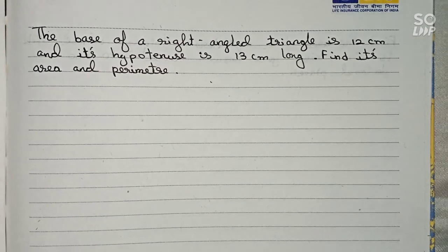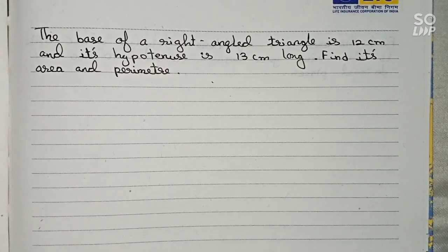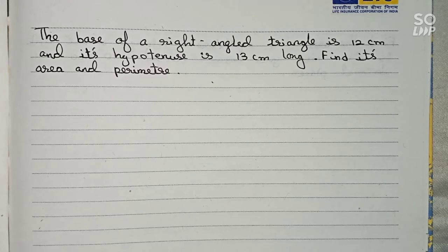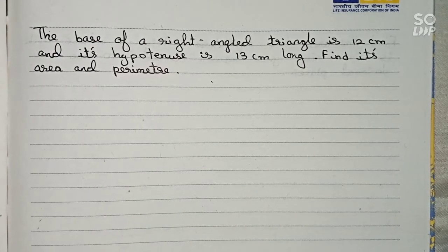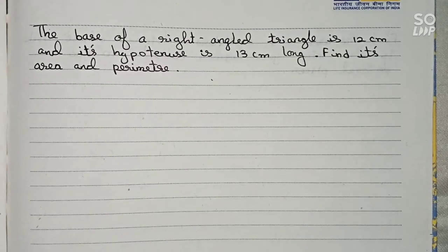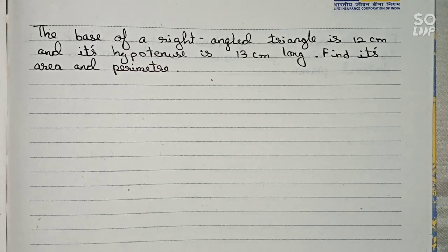Hello guys, welcome to this video. In this video, our question is: the base of a right angle triangle is 12 centimeters and its hypotenuse is 13 centimeters long. Find its area and perimeter.